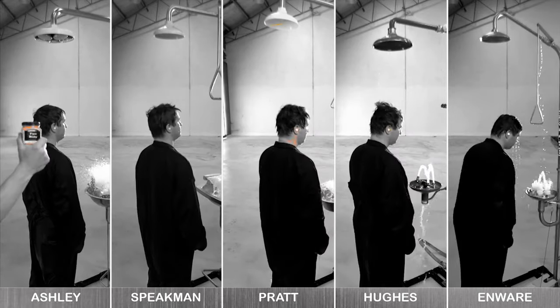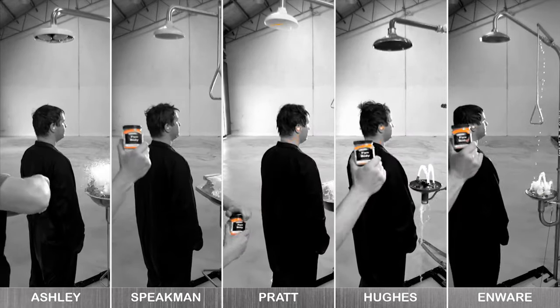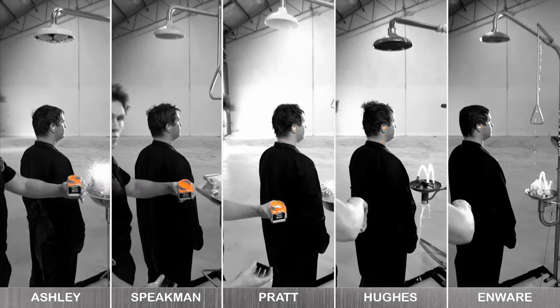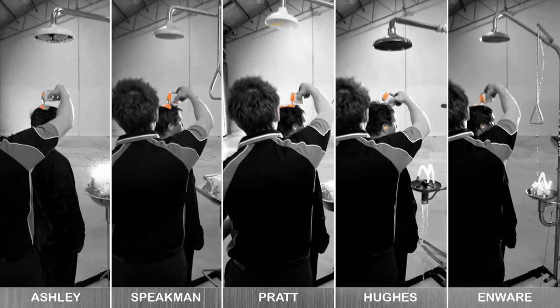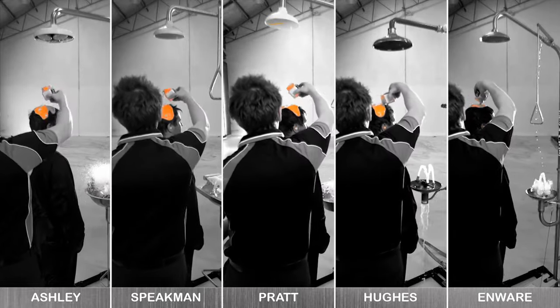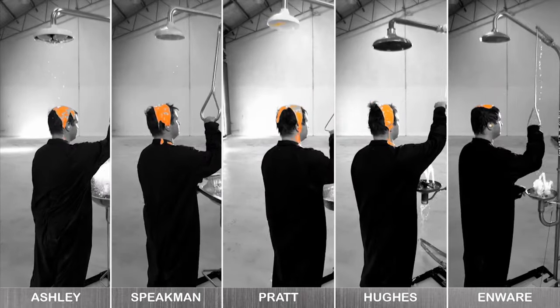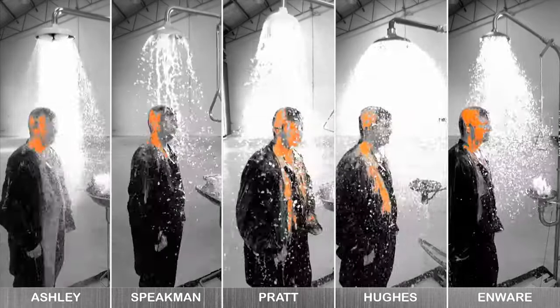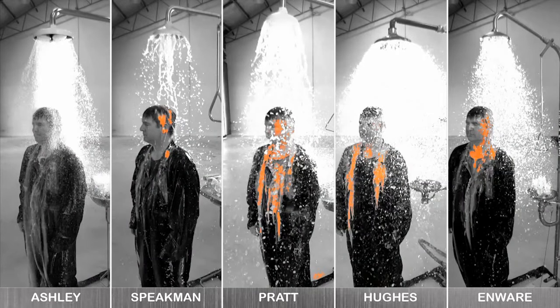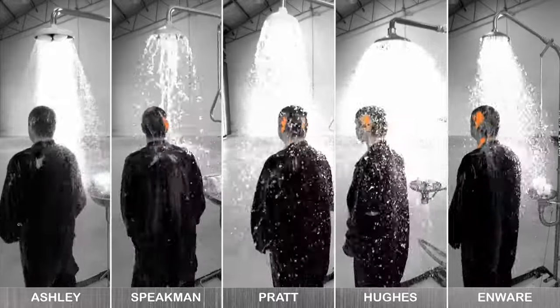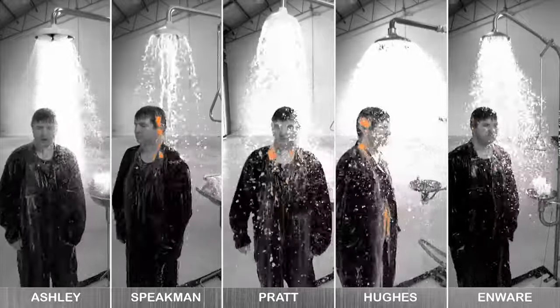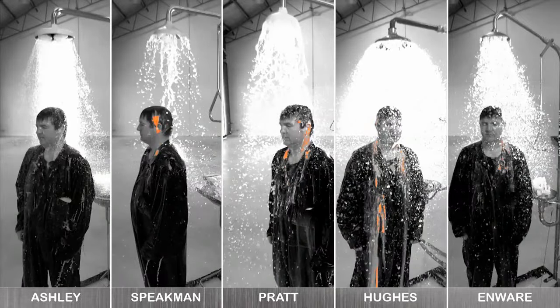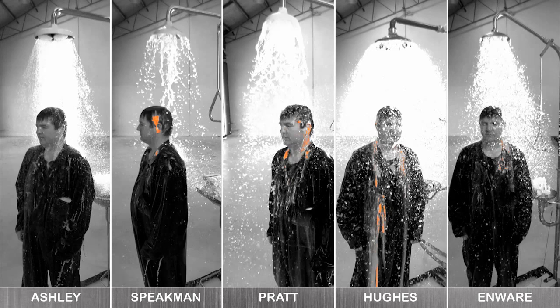In this demonstration, we'll be using an acrylic body paint to simulate our chemical. Each time the same amount of paint will be applied to the user, and the same water pressure and volume will be deployed in the same time. Look how quickly and effectively Ashley's shower removes the orange chemical. At this point there's virtually no chemical remaining. A final look indicates that Ashley's shower not only removes the chemical quicker, but it removes more chemical than any other shower in the allotted time.